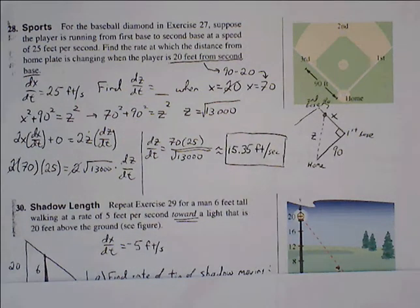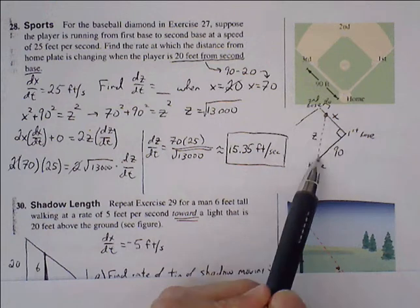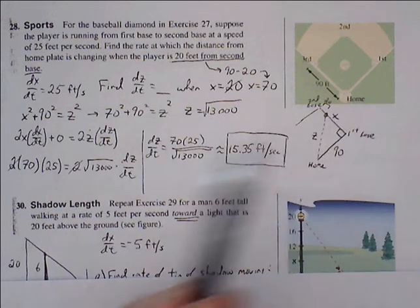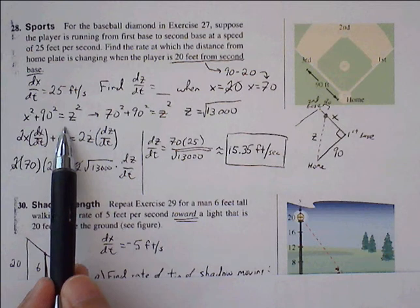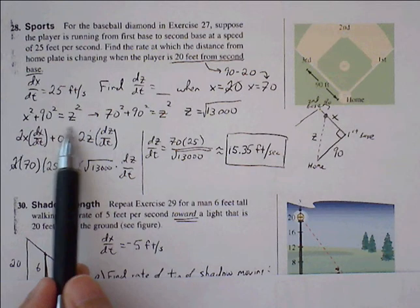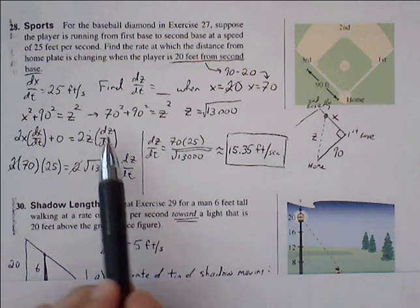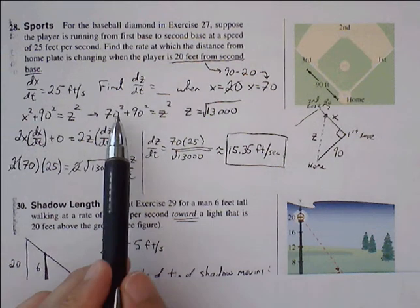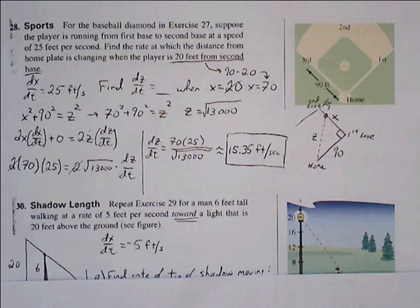Going back to our Pythagorean theorem: x² + 90² = z². Using this we can find the missing z value. Substituting 70 for x: 70² + 90² = z². Taking the square root of the sum gives us z equals the square root of 13,000.